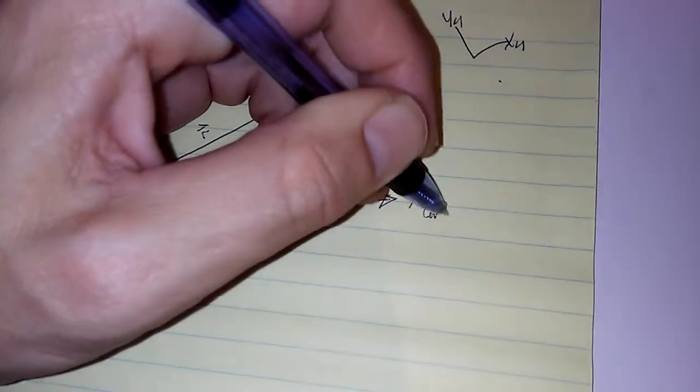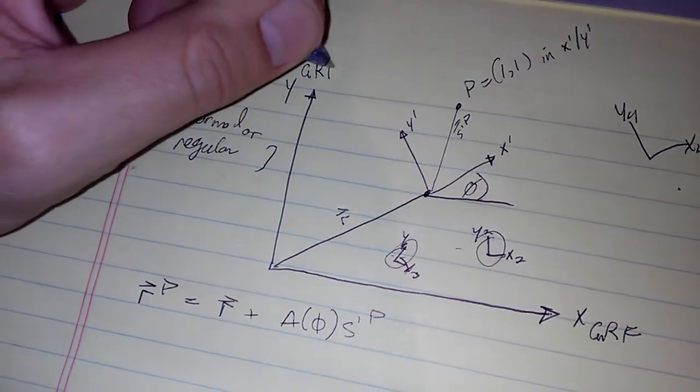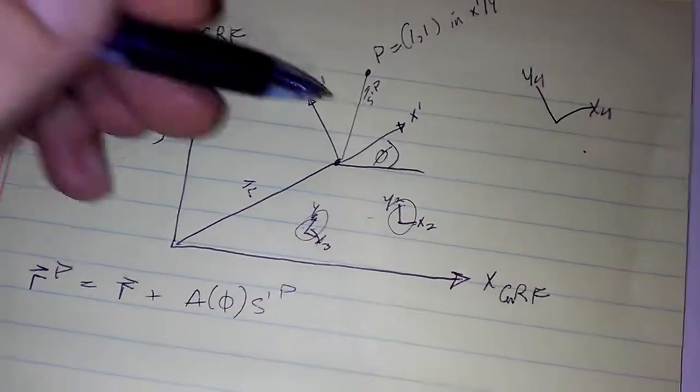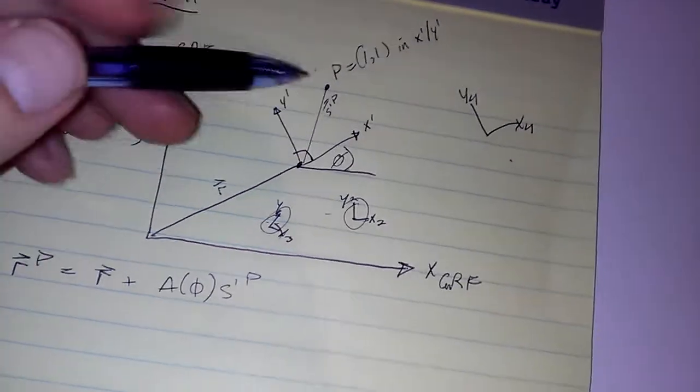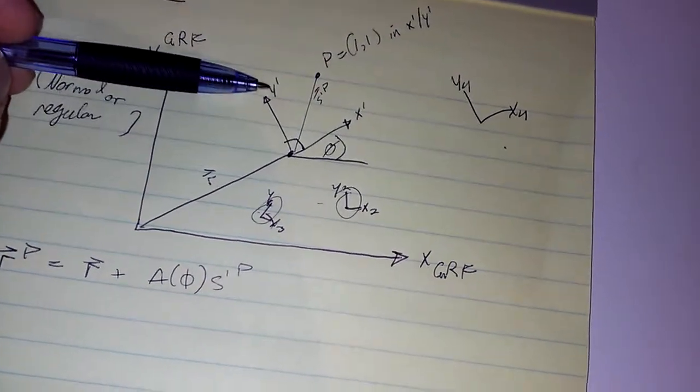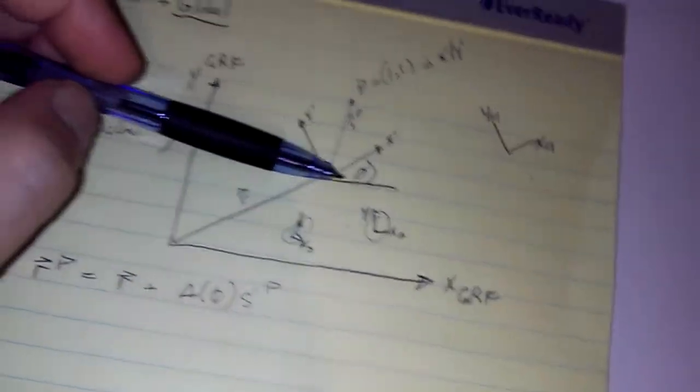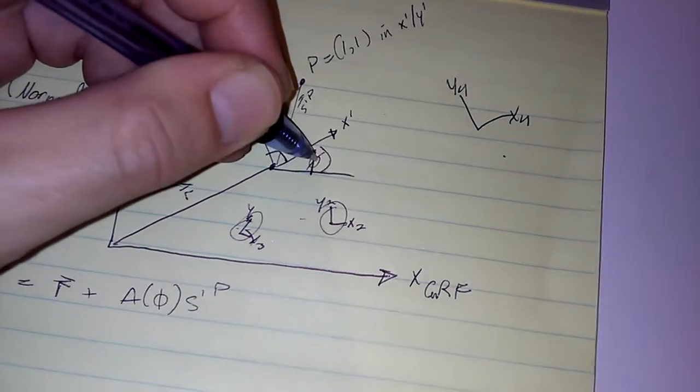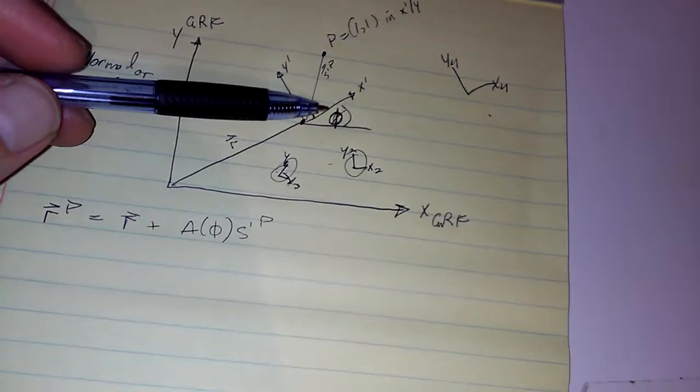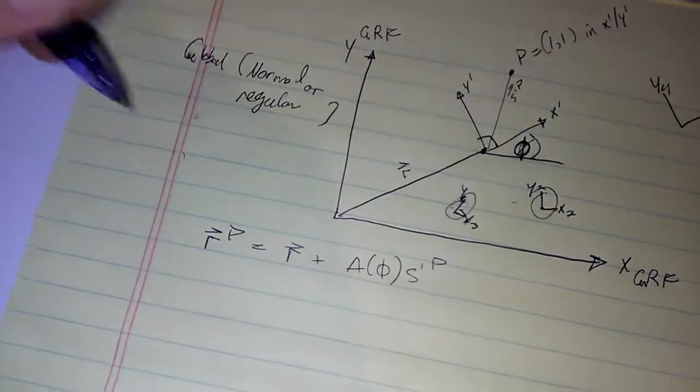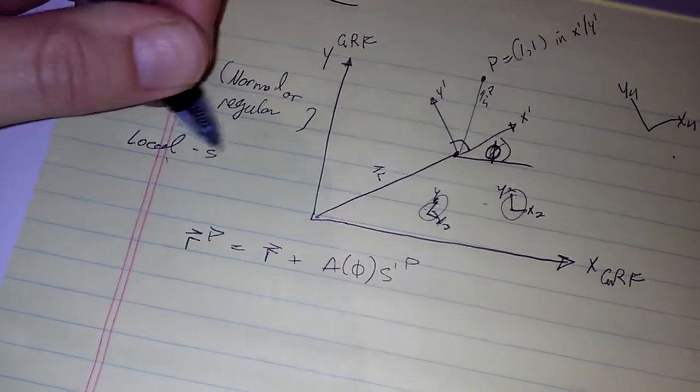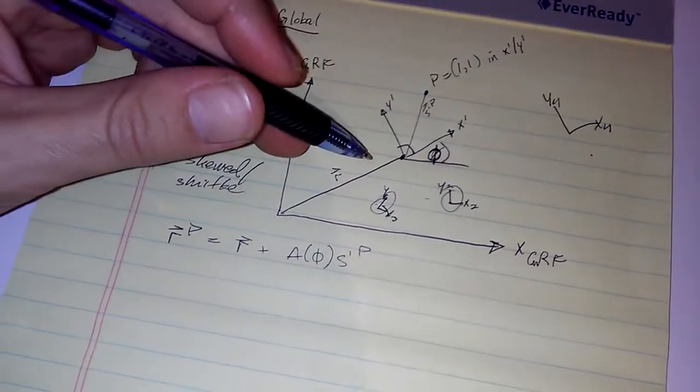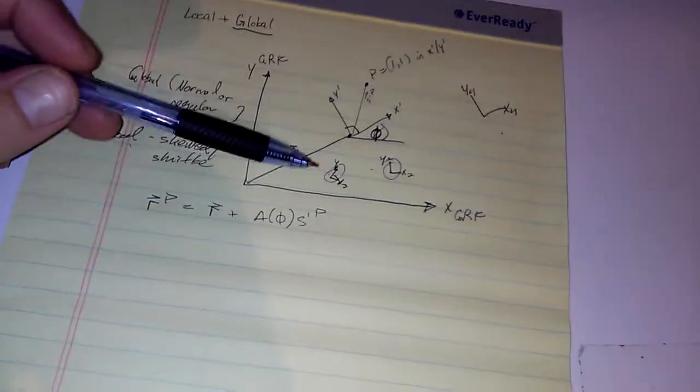I could even put down here global reference frame. Okay, so we have global reference frame. We have this other axis right here, which is 90 degrees. This is x prime, y prime. So what is going on with this axis? This axis is at a different orientation. It is actually at an angle and sorry, I sort of draw my phis like thetas, but this is supposed to be a phi. So the local reference frame, we'll just call this like the skewed reference frame. Skewed slash shifted. So this is a reference frame in the global reference frame that we have to somehow relate to the global reference frame.